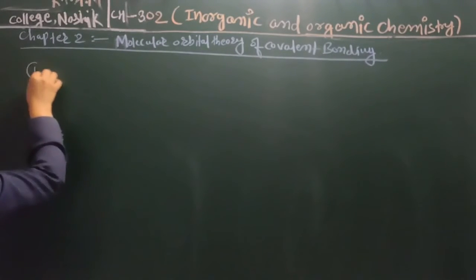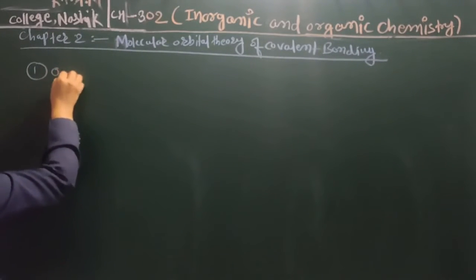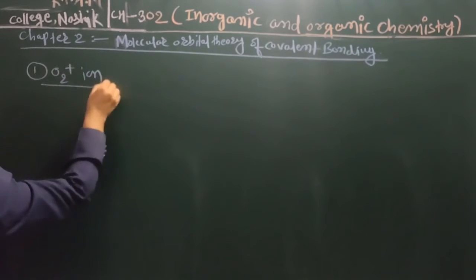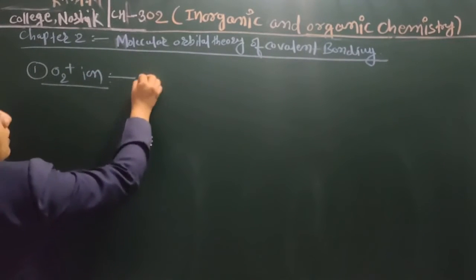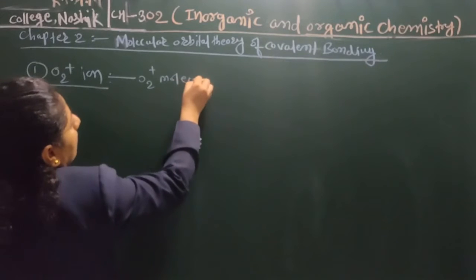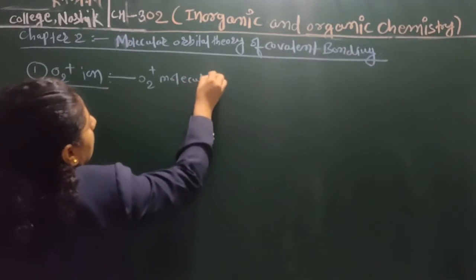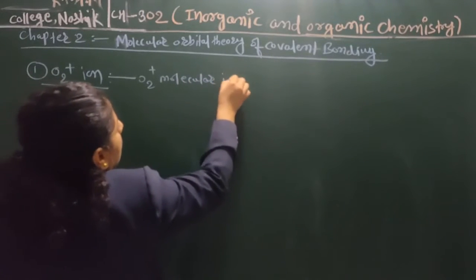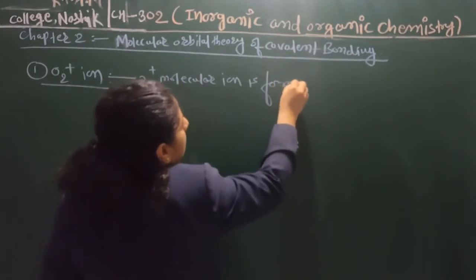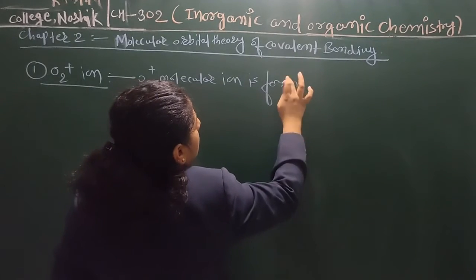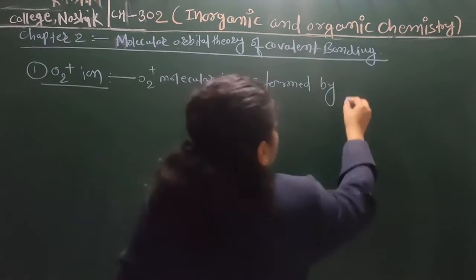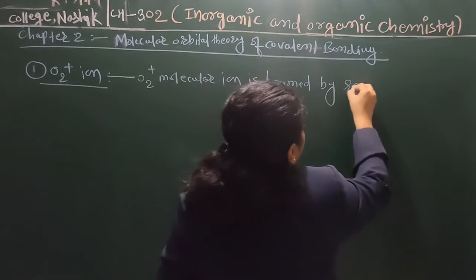We will discuss O2 plus ion. O2 plus molecular ion is formed by losing one electron.